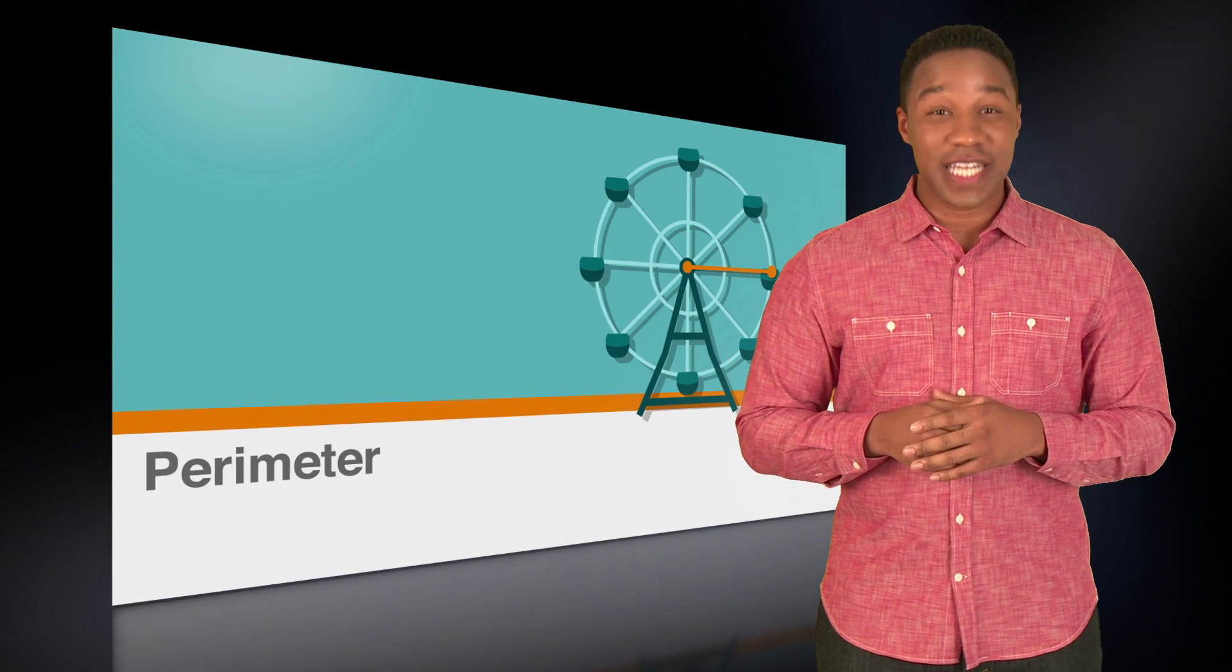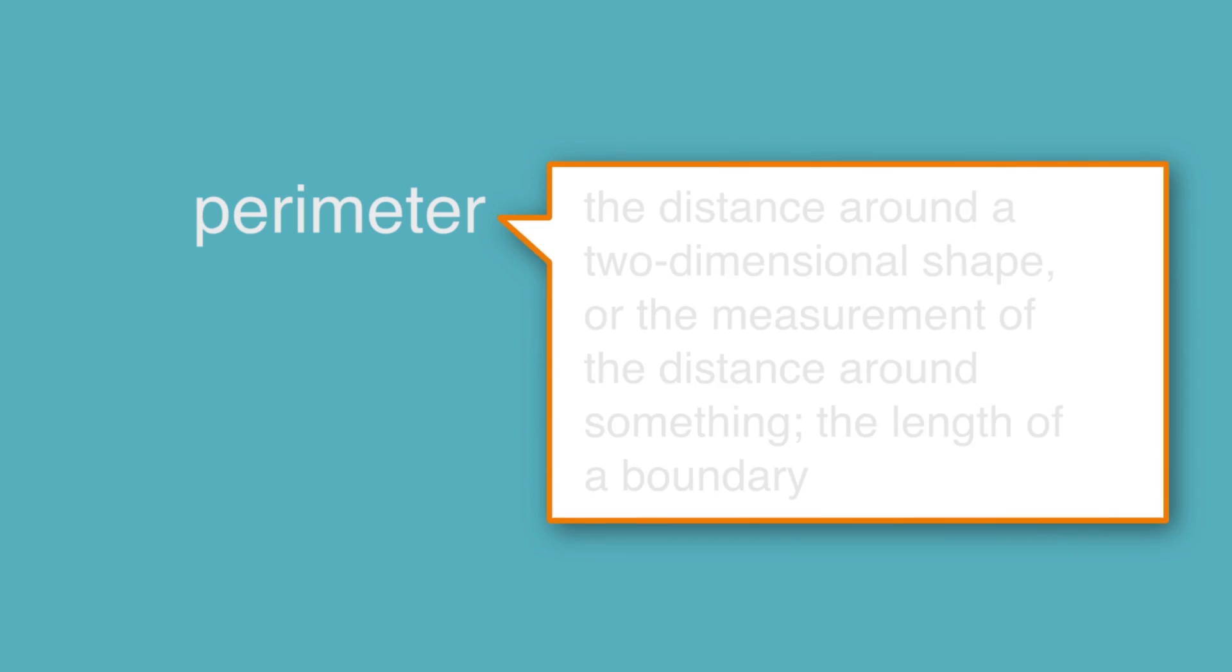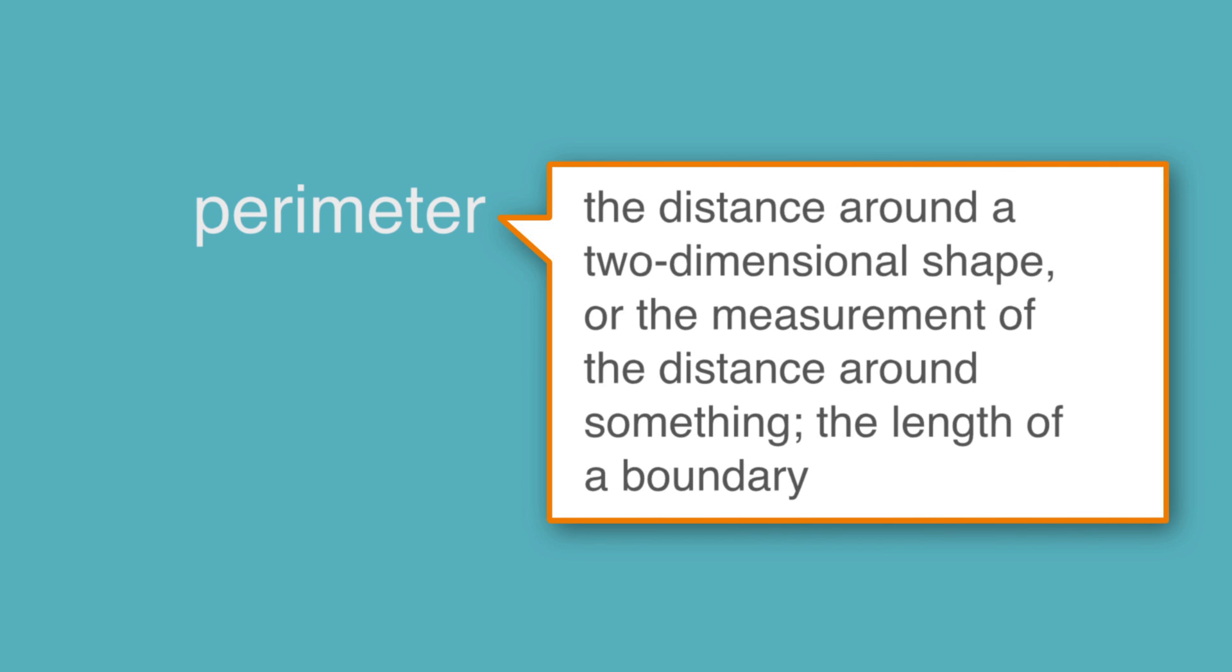Let's get started by looking at the definition of a perimeter. The perimeter is the distance around a two-dimensional shape, or the measurement of the distance around something. Basically, it's the length of a boundary.